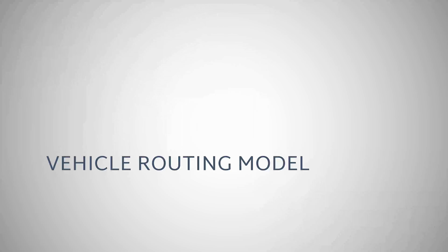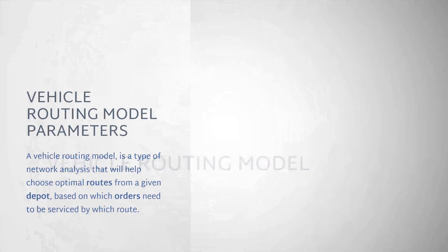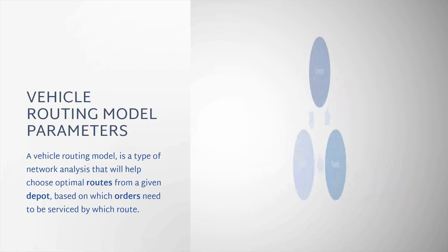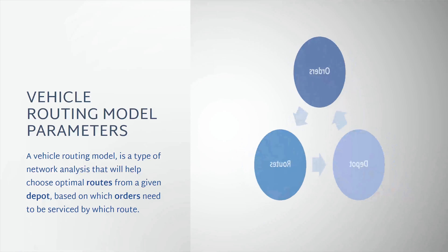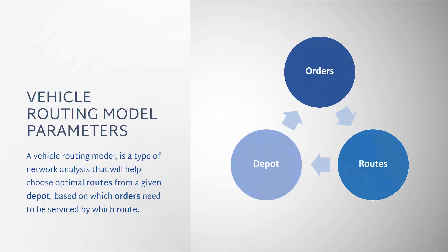A vehicle routing model is a type of network analysis that will help choose optimal routes from a given depot based on which orders need to be serviced by which route.